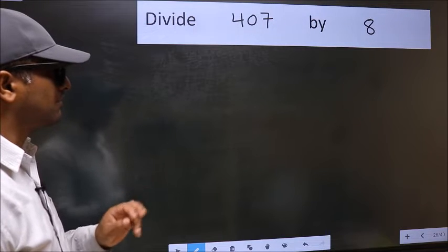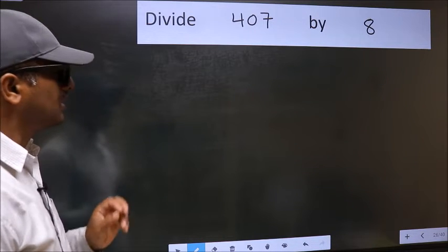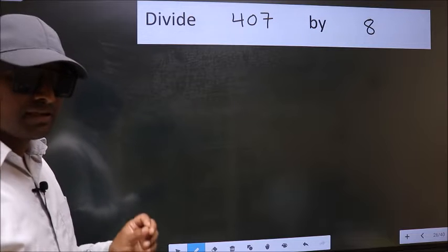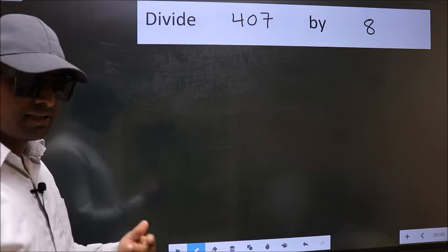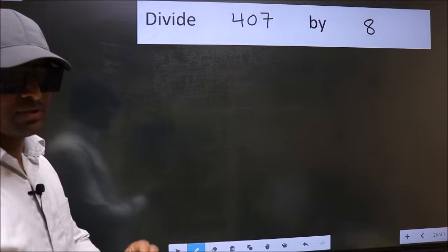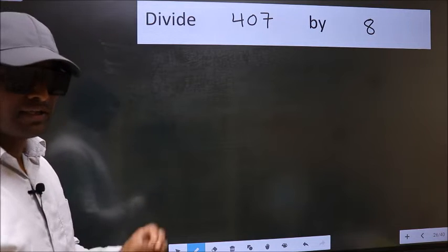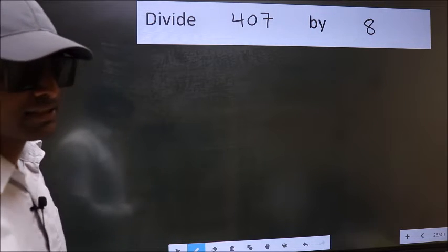Divide 407 by 8. While doing this division, many do this mistake. What is the mistake that they do? I will let you know. But before that, we should frame it in this way. Okay.